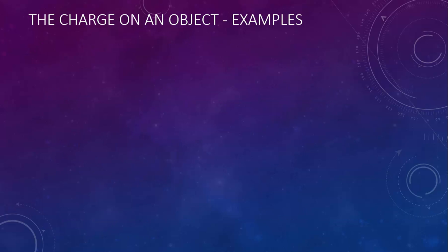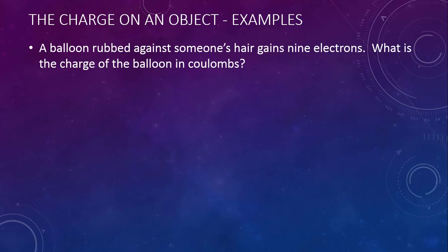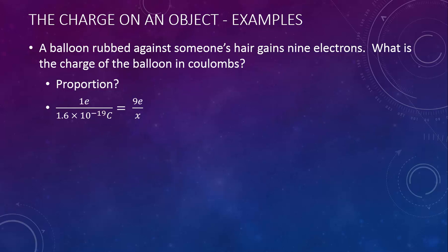Let's look at a couple of examples. A balloon was rubbed against someone's hair and gained 9 electrons. What's the charge of that balloon in coulombs? We can use a proportion: 1 elementary charge equals 1.6 times 10 to the negative 19 coulombs, and we're dealing with 9 elementary charges. Cross multiplying, we find that 9 elementary charges is equivalent to 1.44 times 10 to the negative 18 coulombs. Since the balloon gained electrons, it has a negative charge.